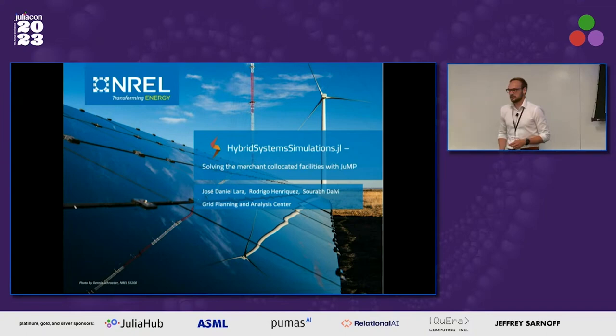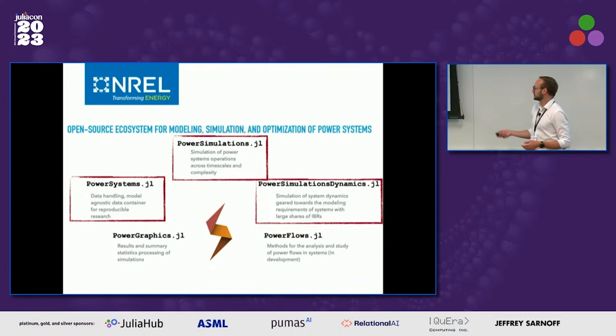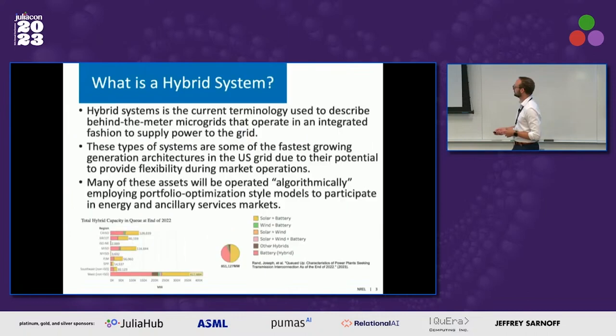This presentation is about how we model the idea of co-located facilities with JuMP. For about six years, we've maintained several packages in the Julia ecosystem to model power systems, both in operations and dynamics, and do plotting and different power flows. We are trying to create a large and scalable ecosystem of power systems modeling, recently renamed Siena. Today we're going to talk about the new capability called hybrid system simulations.